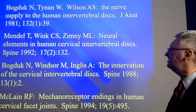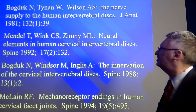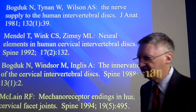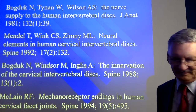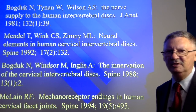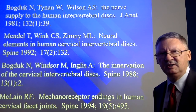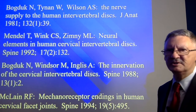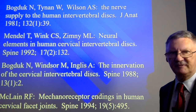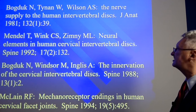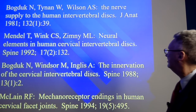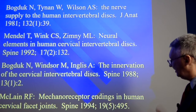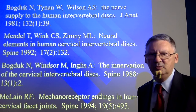Studies examining these structures have been significant. Bogduk's team published on the nerve supply to the human intervertebral discs — very significant because the discs were thought to be avascular and aneural. Using different staining techniques and immunohistochemical studies looking for antibody responses characteristic of nerve tissue, a number of investigators found nerves associated with the discs. Mendel, Wink, and Zimny's team described neural elements in human cervical discs. Bogduk also published on the innervation of the cervical discs. McLean, Weick, and others described mechanoreceptor endings in human facet joints.